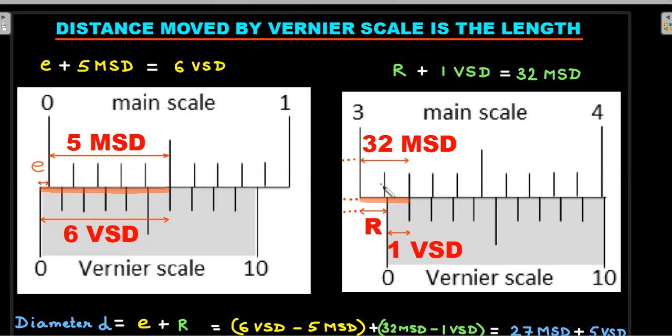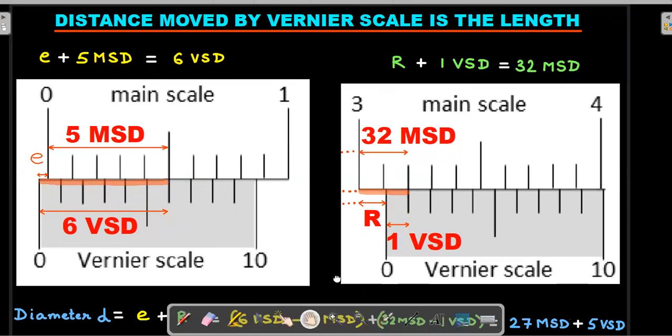The same thing—lower parallel line is equal to upper parallel line logic. If I use the total R reading plus 1 VSD as you could see here, it should be equal to 32 main scale divisions. Remember, 0 to 1 is 10 main scale divisions, like that 0 to 3 would have been 30, another 2 here. So these dotted lines represent that complete length which is not visible in the picture. So R plus 1 VSD is 32 MSD, and as I told you, the required diameter is this R plus this e.